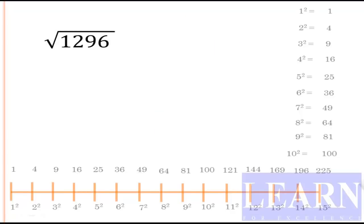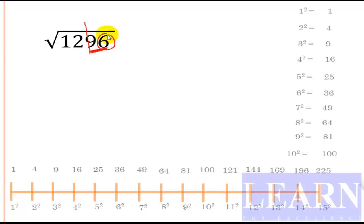The first problem is 1296. The first method is splitting the number into two parts — the last part should have two digits for a square root. Similarly, for cube root it should have three digits. The last digit is 6, so the square root can end with either 4 or 6.